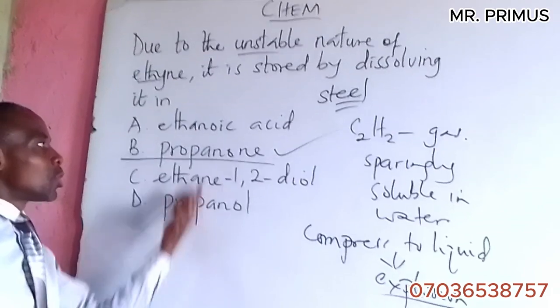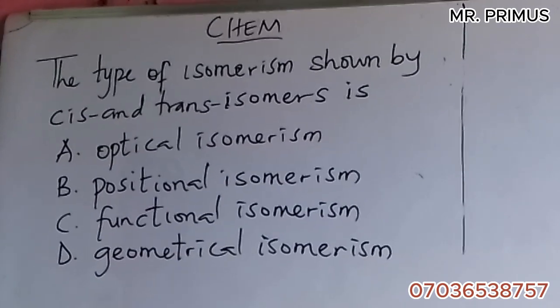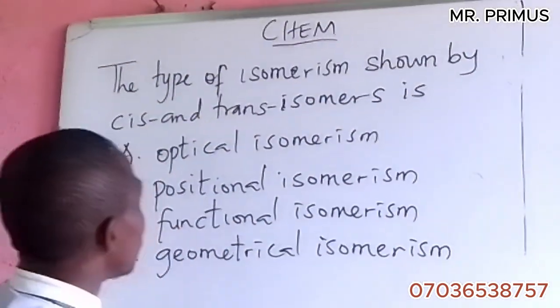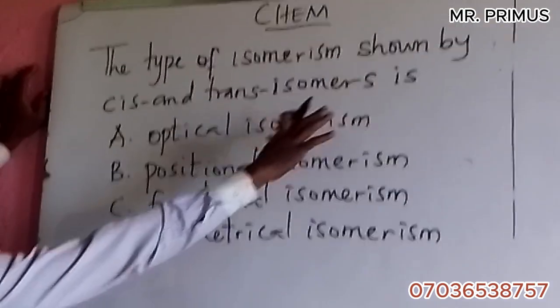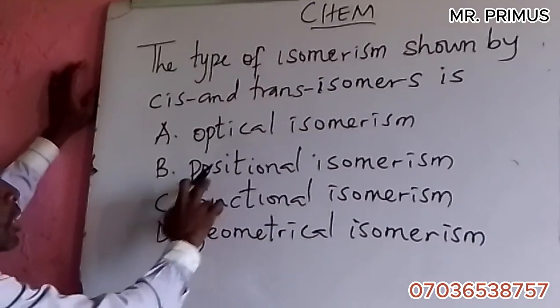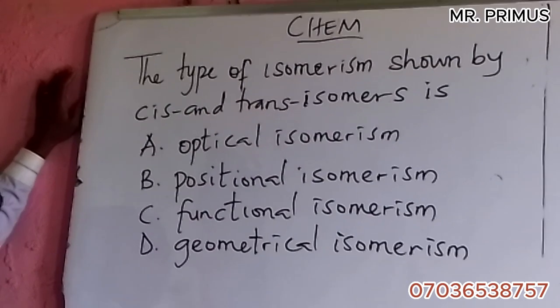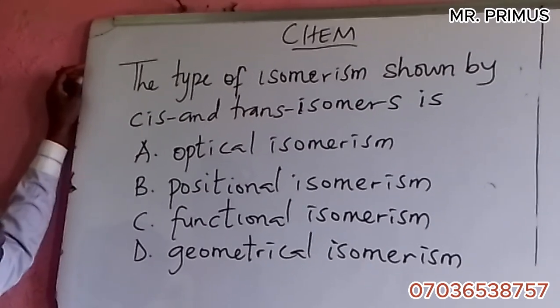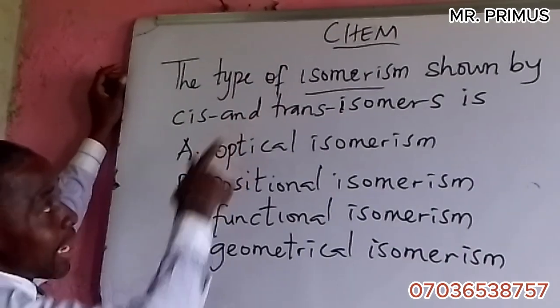Next question: The type of isomerism shown by cis and trans isomers is: optical isomerism, positional isomerism, functional isomerism, or geometrical isomerism? Isomerism in our previous video means same molecular formula, different structural formula.